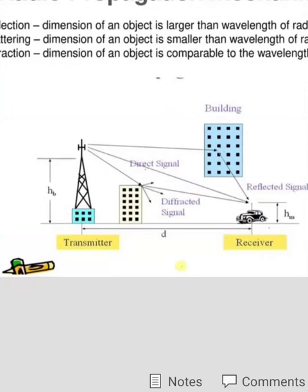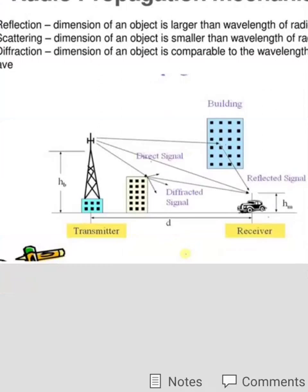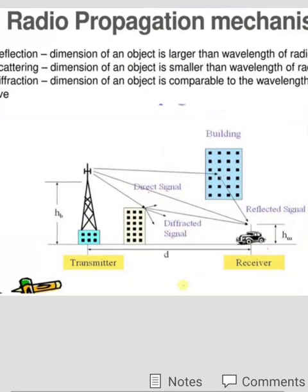In above figure, all these properties are shown. One transmitter is shown in above figure. One receiver is there. Receiver is present in car. One direct wave transmission is there. From large building, reflection of the signal is shown. From these small buildings, diffraction is shown. In this way, our receiver will receive reflected signal, direct wave signal and diffracted or scattered signal.